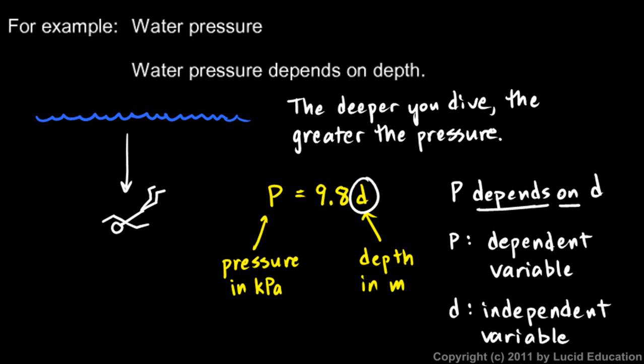In this case, the pressure the guy feels depends on the depth that he is in. So think of this value d as your input. We put a number in for d, or sometimes you hear we plug a number in for d, and then we get out a value for P.